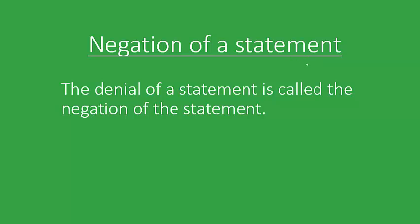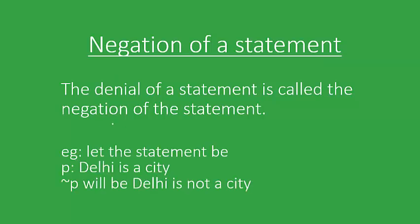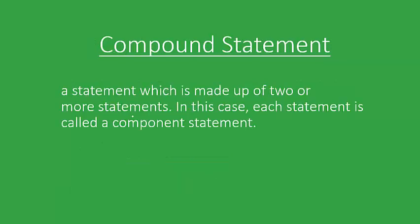An important point is that we are often required to find the negation of a statement — that is, just the opposite of what was meant. The denial of a statement is called the negation of the statement. For example, if statement P says 'Delhi is a city,' then the negation of P says 'Delhi is not a city.' It's as simple as that.